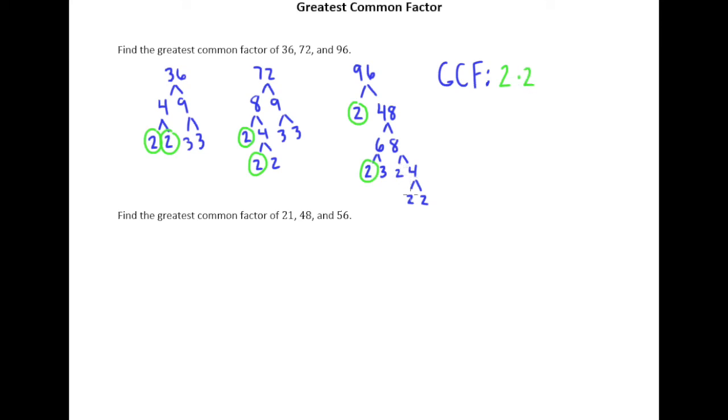Now notice there are three more 2's in 96, and there's a single 2 in 72, but the fact that there's not also one in 36 means I'm done with 2's. It has to be circled in all three numbers.